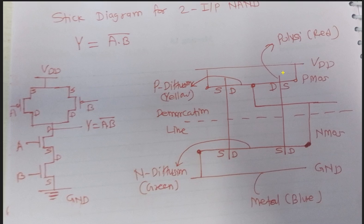A demarcation line is shown in order to separate the pull-up network and the pull-down network. The pull-up network consists of PMOSs and the pull-down network consists of NMOSs.